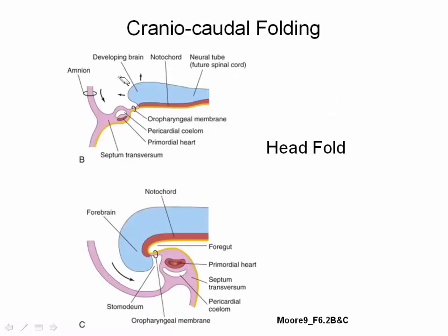We will discuss cranial-caudal folding, starting specifically by looking at the cranial or head end of the embryo. The two images in this slide depict a sagittal view of the developing embryo. This simply means that the embryo was cut into right and left halves and we are looking at the head end.